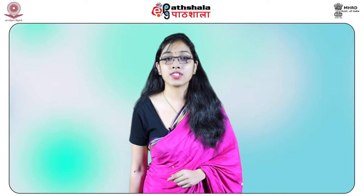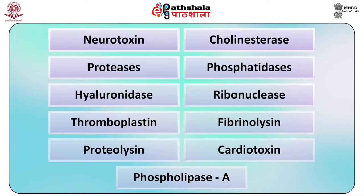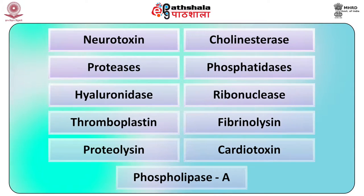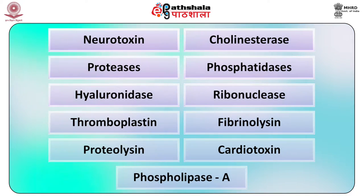The cobra venom is neurotoxic and produces muscular paralysis involving firstly the muscles of mouth and throat, and lastly the muscles of respiration. The action of venom is upon the motor nerve cells, resembling curare. It consists of neurotoxin, cholinesterase, proteases, phosphatidases, hyaluronidase, ribonuclease, thromboplastin, fibrinolysin, proteolysin, cardiotoxin, and phospholipase A. A cobra venom produces convulsions and paralysis while a krait venom produces only muscular paralysis.